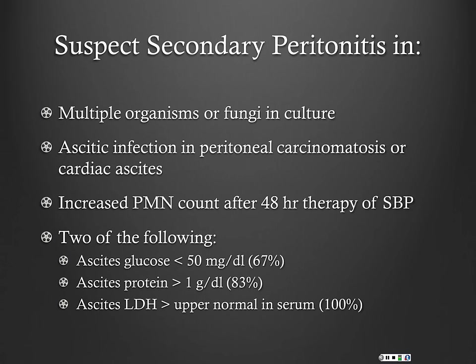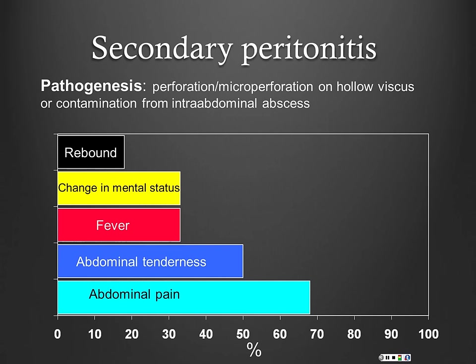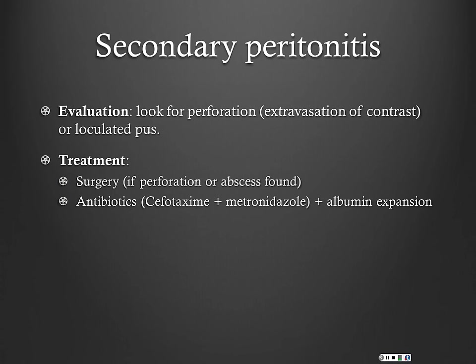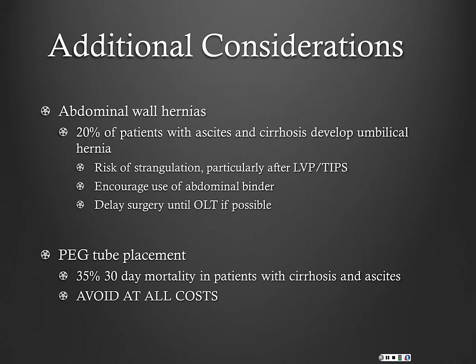Secondary peritonitis should be considered when your culture comes back with multiple organisms — remember, SBP should be monomicrobial in most cases. Always think about perforation of a viscus if you have multiple organisms. You may need to involve surgery and should put the patient on broad-spectrum antibiotics rather than just a cephalosporin.